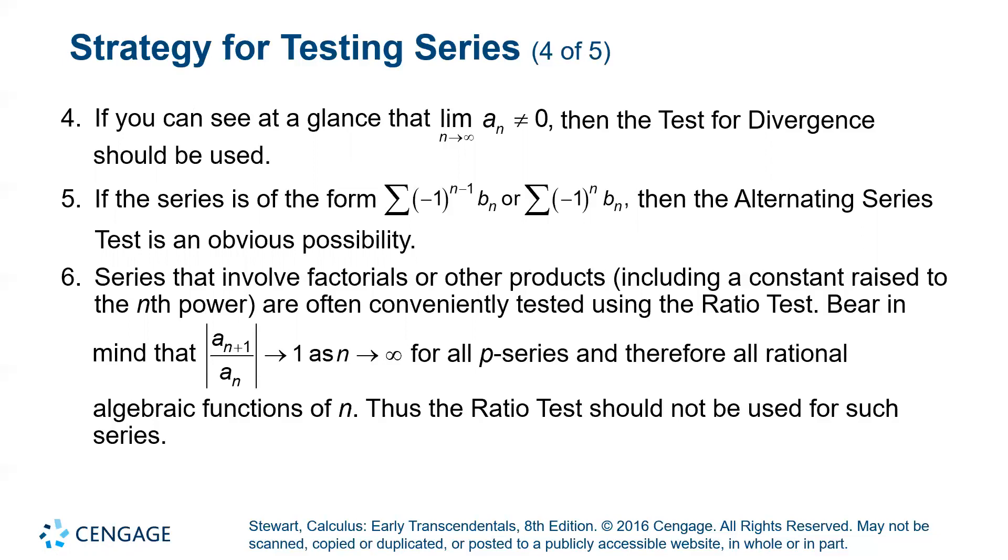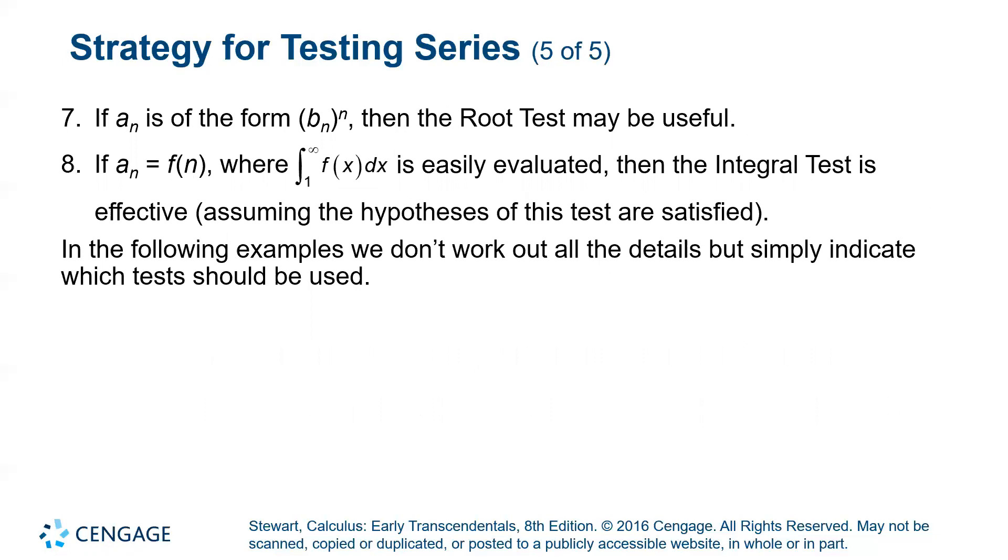Remember that if the ratio test or root test result in a limit of one then nothing can be said and you have to try something else. And if you have something that is raised to the nth power then the root test is almost always very helpful because the nth root will cancel out an nth power.